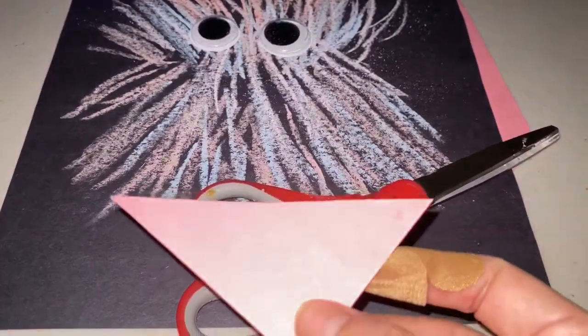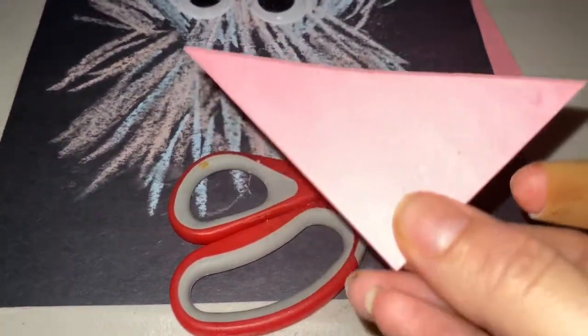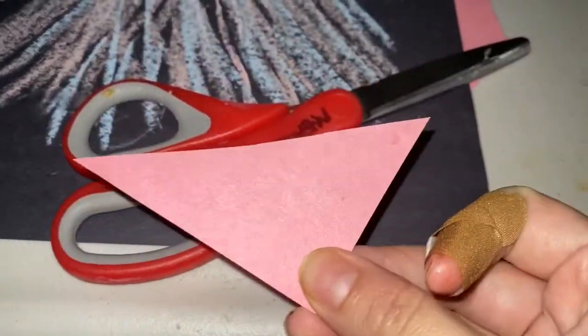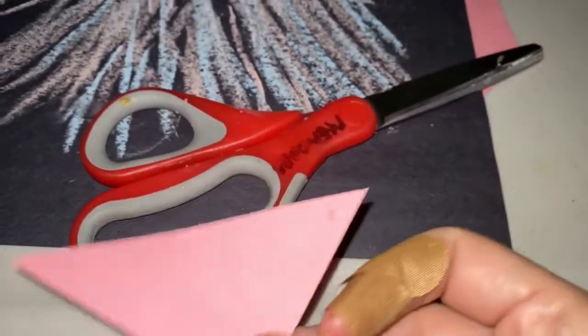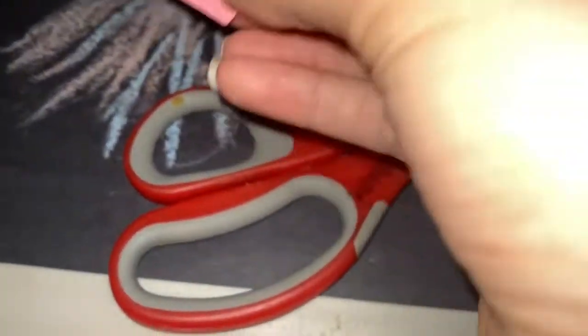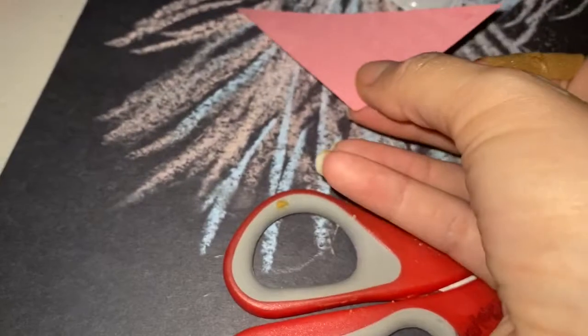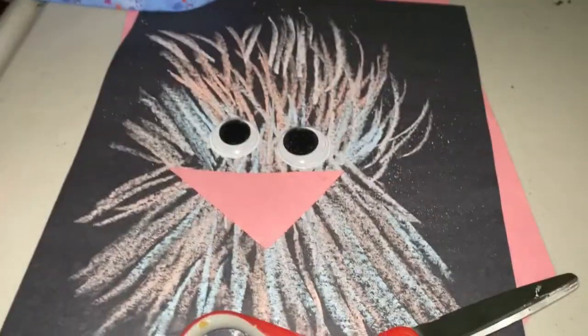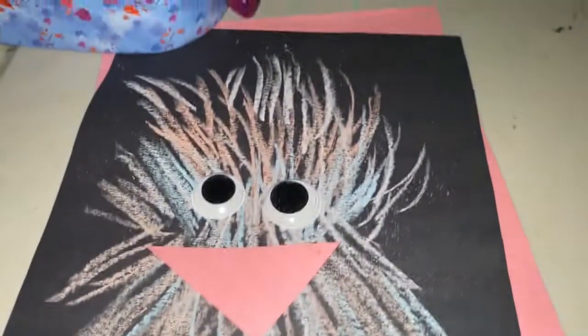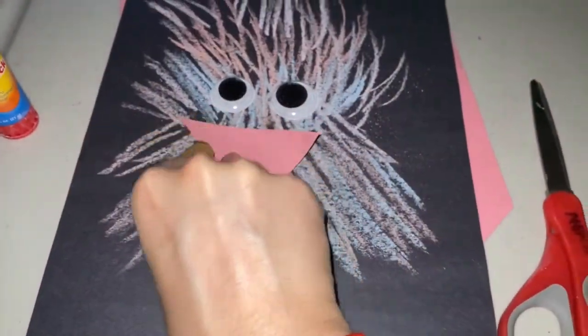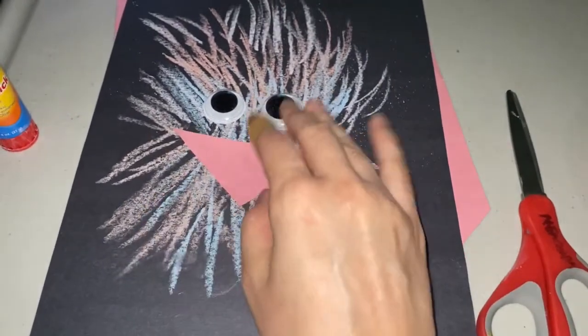Next, with scissors, we're gonna cut a triangle piece from the corner of the paper. Again, ask for parent supervision or an adult. Now we're gonna glue the beak of the bird right there, like so.